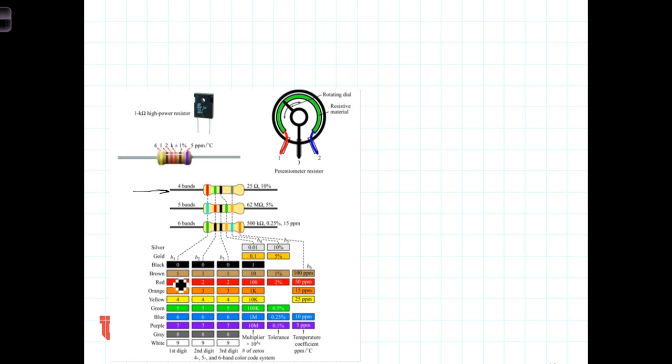Brown represents the digit one. Red is two. Orange is three. Yellow, four. Continue on down through green, blue, purple. Gray is eight. And then white is nine.